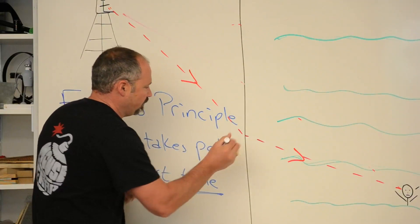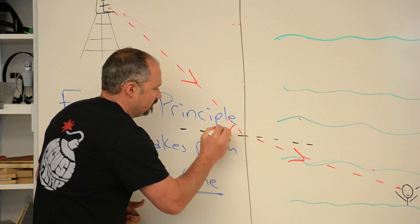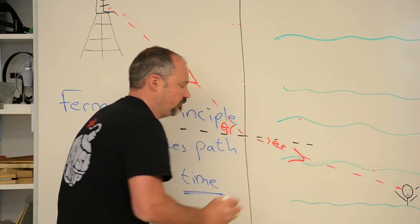And if we draw in the normal line, you get these two angles. The angle of incidence and the angle of refraction.